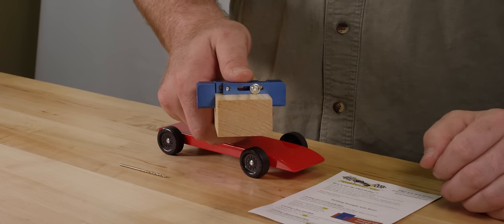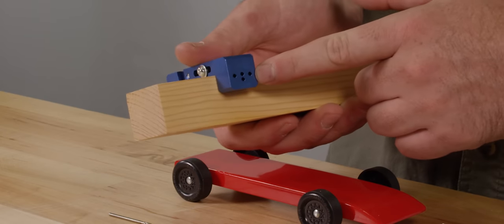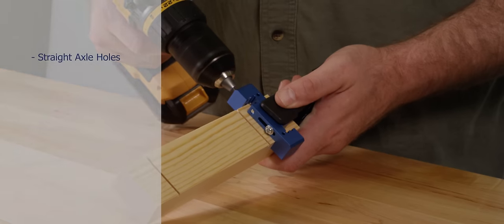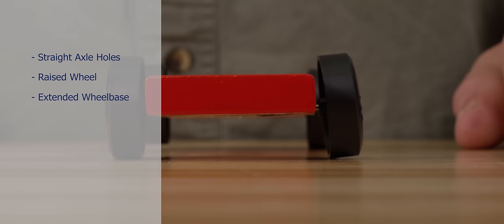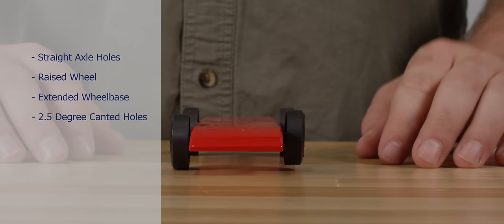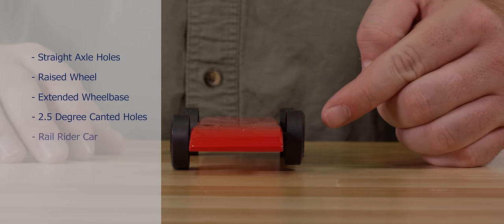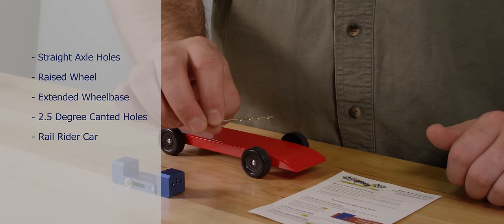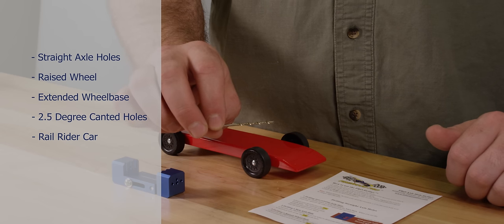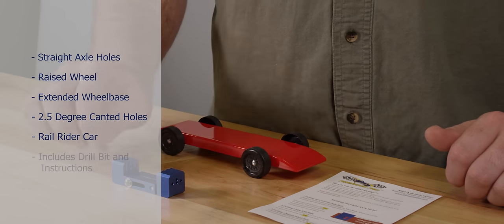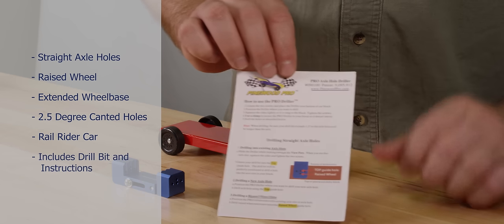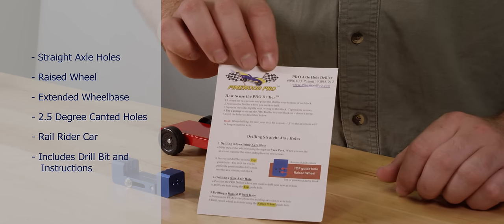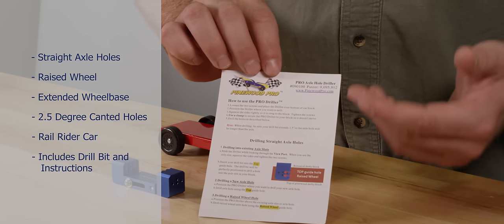With this one tool you get speed advantages by drilling perfectly straight axle holes, a raised wheel axle hole, an extended wheelbase, canted axles using our exclusive 2.5 degree angled axle holes, and you can use it to drill holes for a rail rider car. The Pro Driller includes a perfectly sized 2.2 millimeter drill bit so you can insert your axles with the push of a finger and of course an instruction sheet. This one tool gives you five speed advantages to help you make your car the fastest.